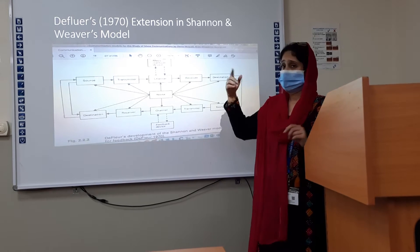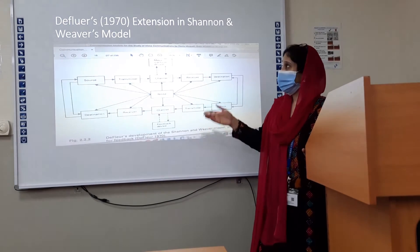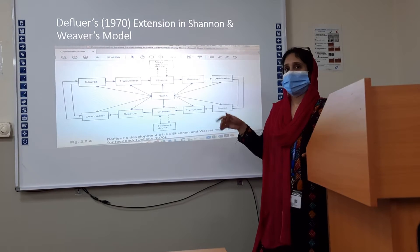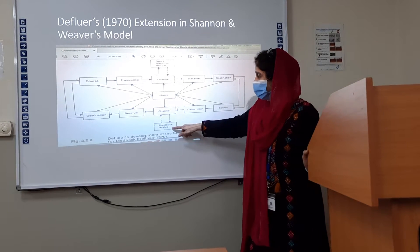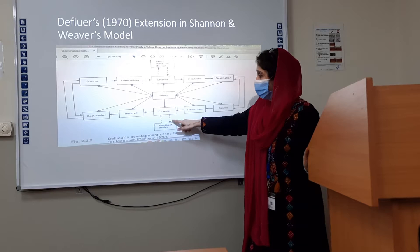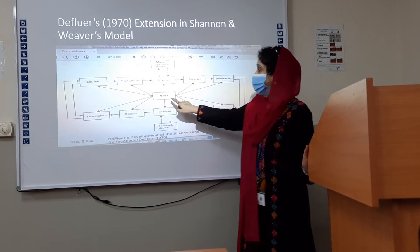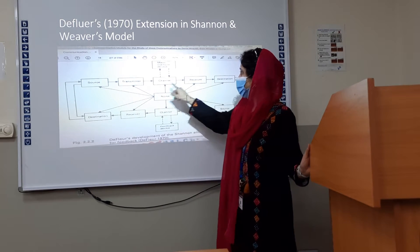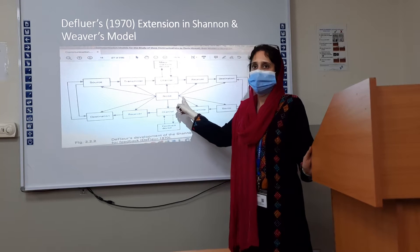In 1970, by that time, TV had started becoming popular. His time period was also affecting the development of this model. He says that there can be a feedback device as well at the point of channel. Noise is a kind of barrier which is affecting every element of communication in this model.